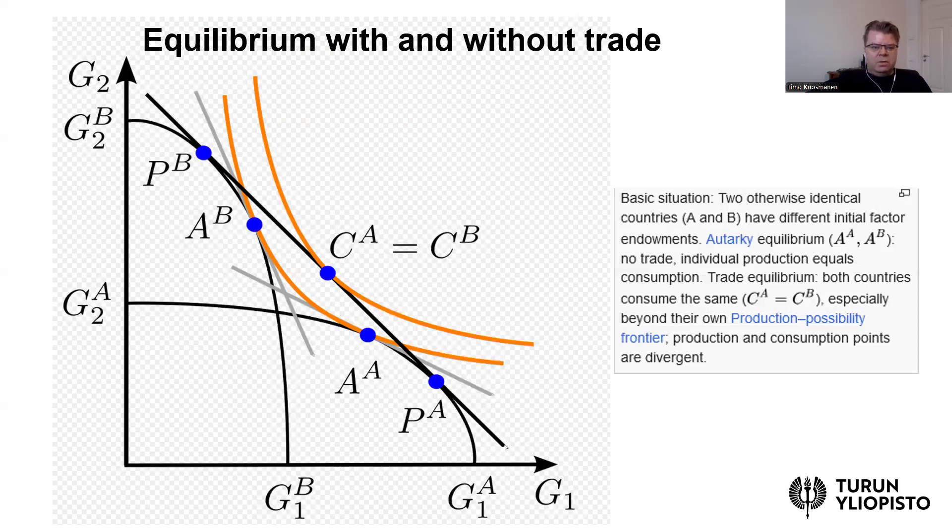So how do the countries get to this point C? This is because countries can specialize more in the factor where they are more abundant. Notice that if you think first about country A, country A is more abundant in a factor that helps to produce good number one. So if good one is capital intensive, then country A has a larger endowment of capital. So with trade, country moves from AA to PA. It increases its capital intensive production and produces PA, and then it trades with country B.